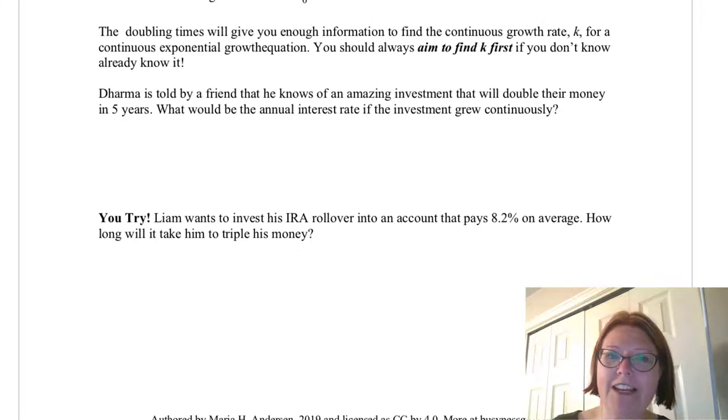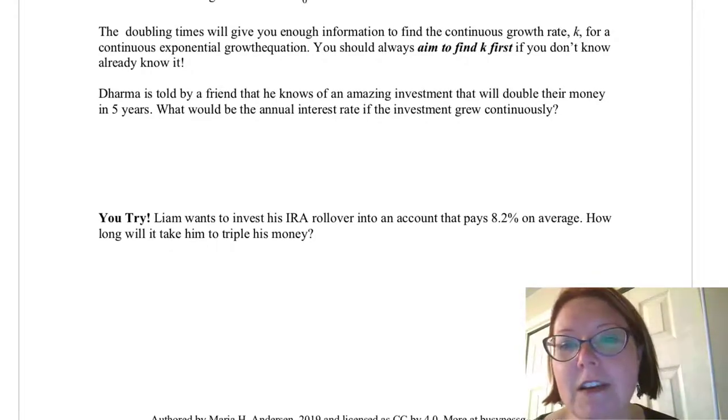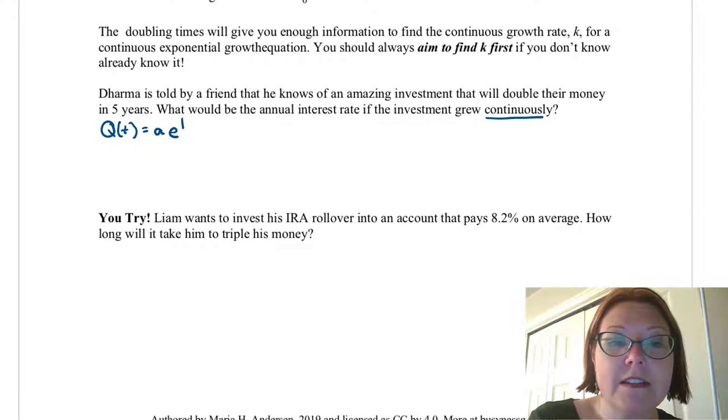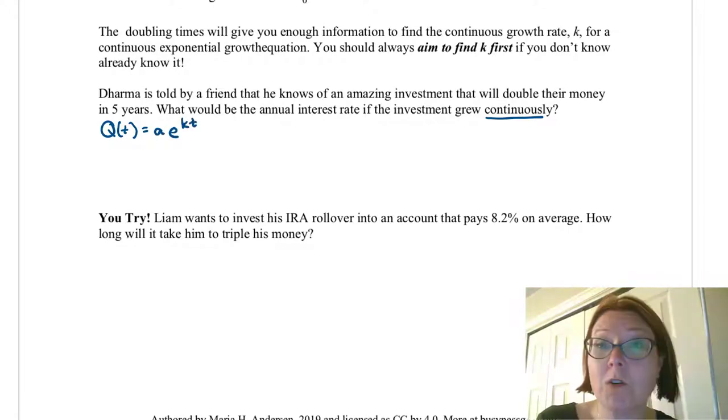Let's try a problem. Dharma is told by a friend that he knows of an amazing investment that will double their money in five years. What would be the annual interest rate if the investment grew continuously? Let's write down what we know in this problem. We know that we're looking at continuous growth so that's something like q of t equals lowercase a lowercase e to the kt for our model.